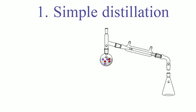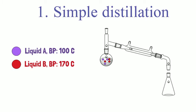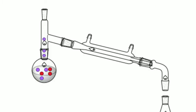Here we have a mixture of two different liquids. Liquid A boils at 100 degrees and liquid B boils at 170 degrees. Once the distillation is set up, we're going to slowly heat the reaction mixture until the mixture begins to boil. As the temperature reaches 100 degrees, liquid A, which is the more volatile liquid, evaporates first.